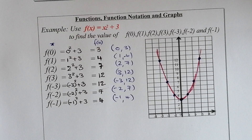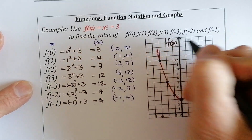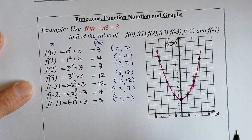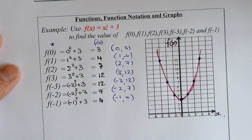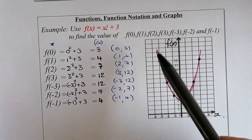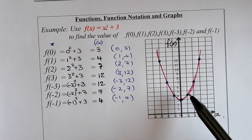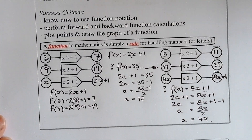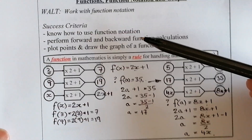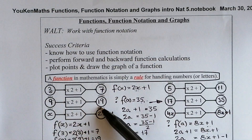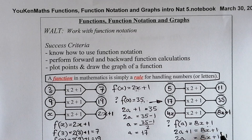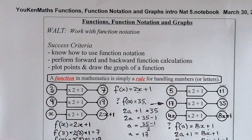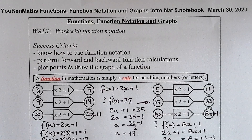This graph is plotted on a Cartesian diagram, where the vertical axis is either y or f of x, and the horizontal axis is x. Joining the points up forms a quadratic graph, which is something we'll be moving on to soon. Remember the criteria: know how to use function notation, perform forwards and backwards calculations, plot points, and draw the graph of the function.